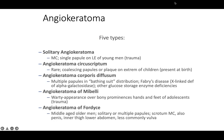Next we'll talk about angiokeratoma. There are five well-known types. Solitary angiokeratomas are the most common — a single papule on the lower extremity of a young man, often occurring after trauma. Angiokeratoma circumscriptum is rare, with coalescing papules or plaques on the extremities of children, present at birth. Angiokeratoma corporis diffusum shows multiple papules in a bathing suit distribution, associated with Fabry's disease — an X-linked deficiency of alpha-galactosidase and other glycogen storage enzyme deficiencies.